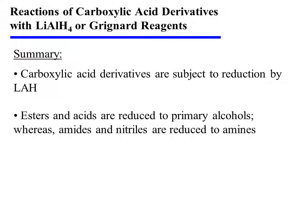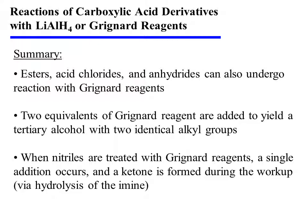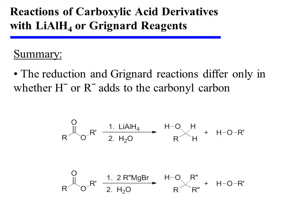In summary, carboxylic acid derivatives are subject to reduction by lithium aluminum hydride. Esters and acids are reduced to primary alcohols, whereas amides and nitriles are reduced to amines. Esters, acid chlorides, and anhydrides can also undergo reaction with Grignard reagents; two equivalents of Grignard reagent are added to yield a tertiary alcohol with two identical alkyl groups. When nitriles are treated with Grignard reagents, a single addition occurs and a ketone is formed during workup via hydrolysis of the intermediate imine. It's very helpful to remember that the reduction and Grignard reactions differ only in whether hydride or carbanions were added to the carbonyl carbon.